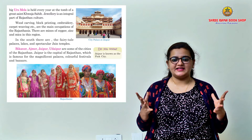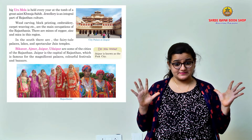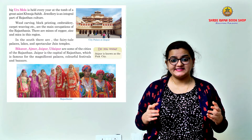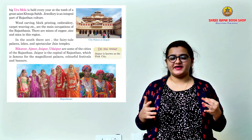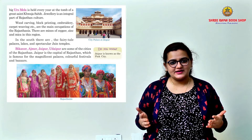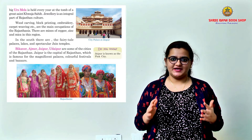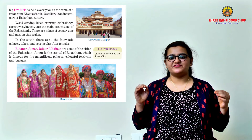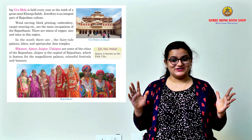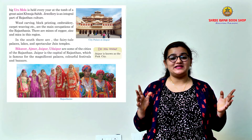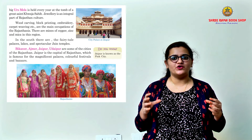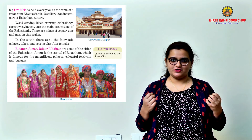In the south, there are fairy tale palaces like the spectacular Jain temples — huge, nice, big structures. Important places like Bikaner, Ajmer, Jaipur, and Udaipur are some of the cities in Rajasthan. Can you tell me what is the capital of Rajasthan? Jaipur is the capital of Rajasthan. It is famous for magnificent palaces, colourful festivals, and bazaars. Many people come and have their destination weddings in those palaces — they give a royal feel.